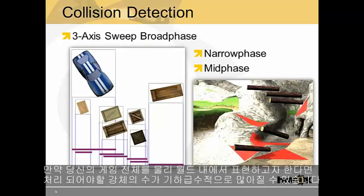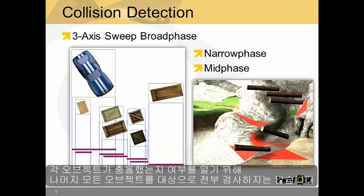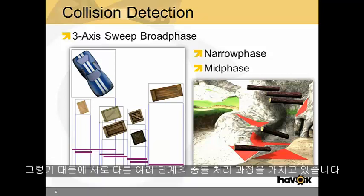When you're trying to represent your entire game in the physical world, the number of objects can quickly become very large, and this becomes a performance problem. We don't want to test each object against every single other object to see if it collides — at least not with expensive algorithms. So instead, we have different collision detection phases.